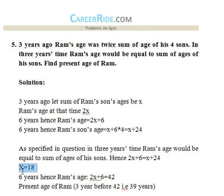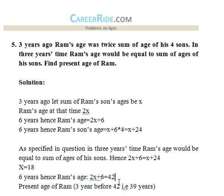Solving gives x equals 18. Six years hence from three years ago, Ram's age is 2x plus 6 equals 42. But since we are counting from three years ago, 42 is Ram's age three years from now. So we subtract three years to get his present age: 42 minus 3 equals 39 years. Ram's present age is 39 years.